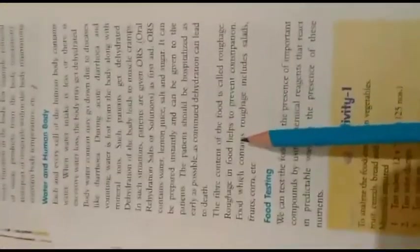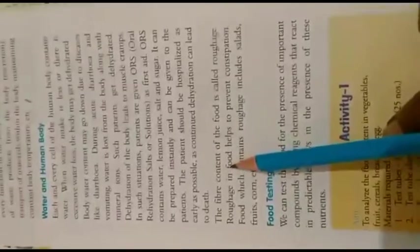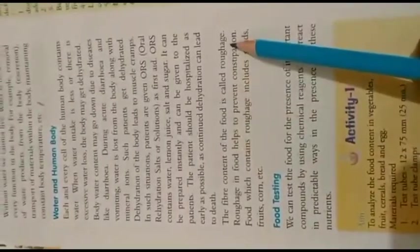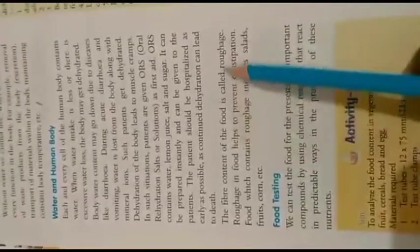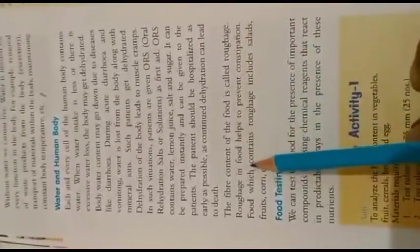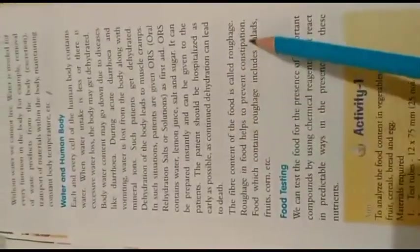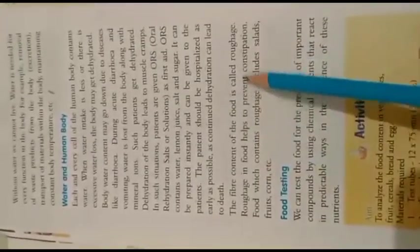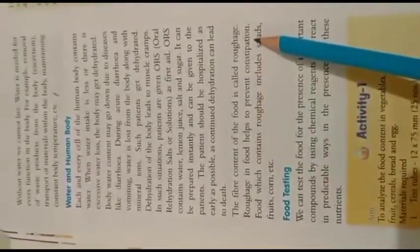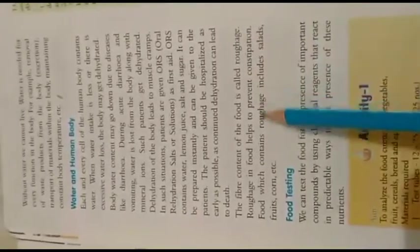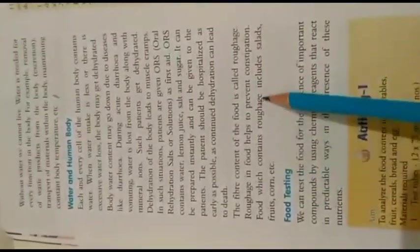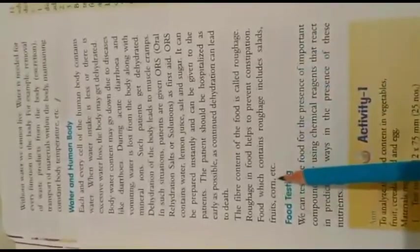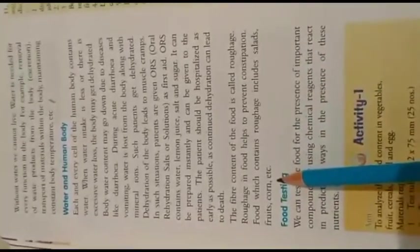The fiber content of food is called roughage. Roughage in food helps to prevent constipation — jo food mein roughage present hota hai uske waje se constipation ko prevent karta hai. Food which contains roughage includes salads, fruits, corn, etc.